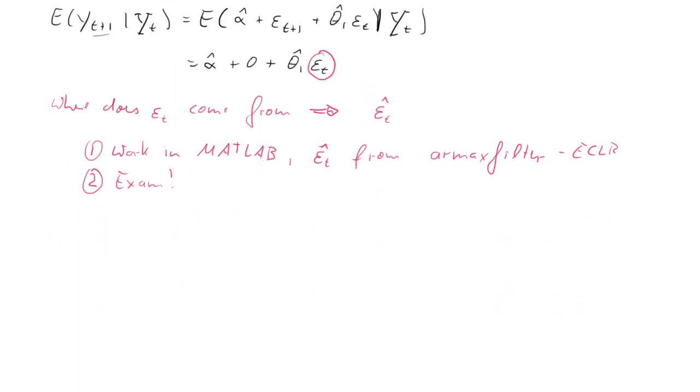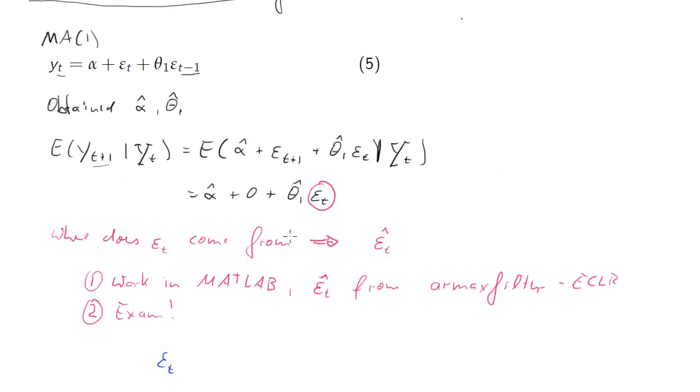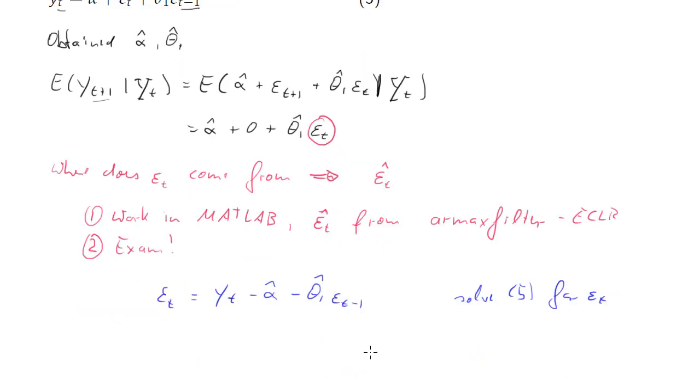So let's say we want epsilon_t. I'll get the hat soon, but I'll leave it off for a purpose. What we'll start out with is that we solve equation 5 for epsilon_t, and what we get in that case is epsilon_t equals y_t minus alpha hat minus theta 1 hat epsilon_t-1.